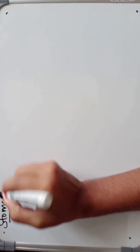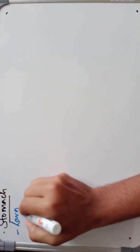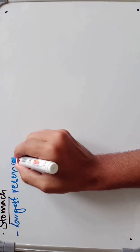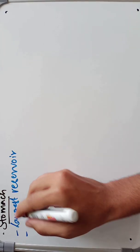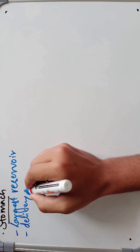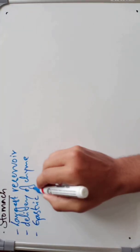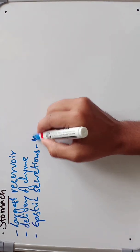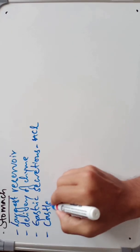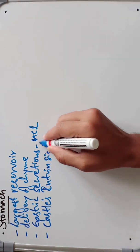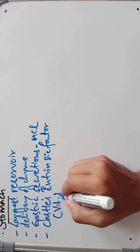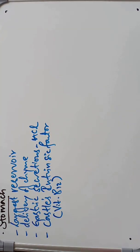Welcome. Today we are going to discuss the anatomy of the stomach. Generally, the stomach is the largest reservoir of the alimentary canal and it controls the rate of delivery of chyme into the duodenum — chyme being the digested food. It also controls gastric secretions, which include HCL and other things, and it produces intrinsic factor, which helps in the absorption of vitamin B12.